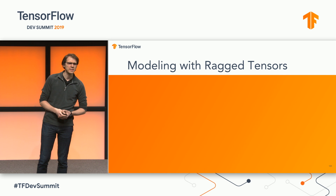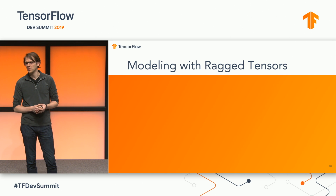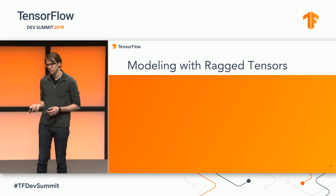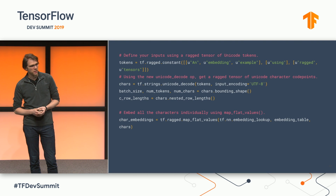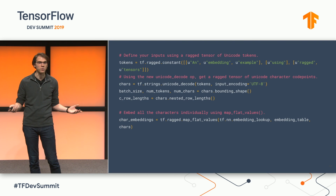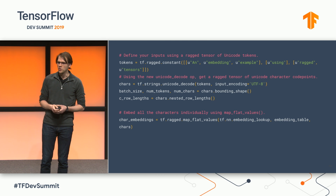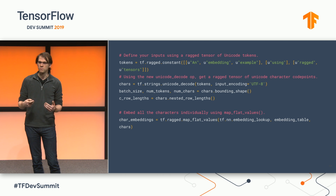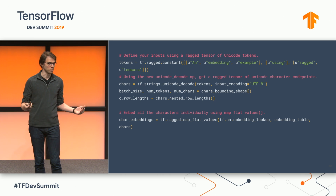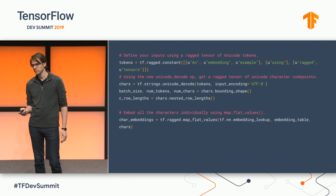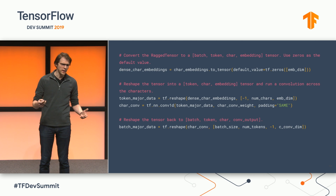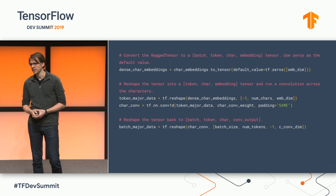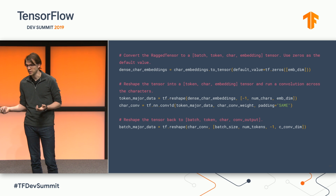To illustrate how to use ragged tensors in a model, let's consider using a bag of character-level embeddings to create a token-level embedding. We start by taking a ragged tensor of tokens, separated by batch, and applying unicode decode — a new op that outputs a ragged tensor of unicode code points, separated by batch and token. We can then use map flat values to get an embedding for each of these code points. Now, char embedding is a four-dimensional ragged tensor with batch, token, sentence, and embedding dimensions.